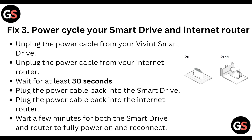Power cycle your smart driver and internet router. Unplug the power cable from your Variant smart drive and unplug the power cable from your internet router. Wait 30 seconds, then plug the power cable back into the smart drive, then plug the power cable back into the internet router. Wait a few more minutes for both the smart drive and router to fully power on and reconnect.